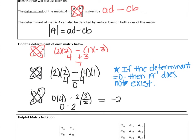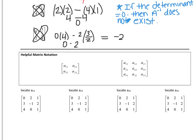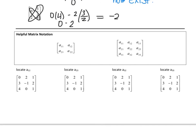We discussed that last time, so let's just write it down to clarify: if the determinant equals zero, then A to the negative one does not exist. Now let's move on to find minors and cofactors. Before we can do that, I want to talk about some helpful matrix notation.